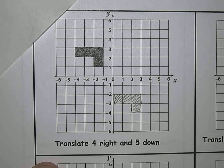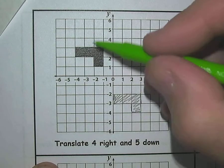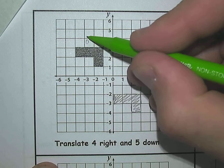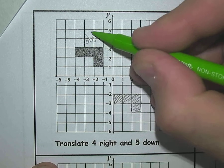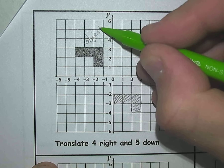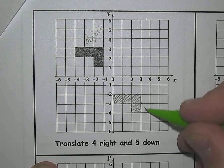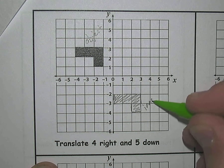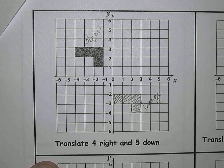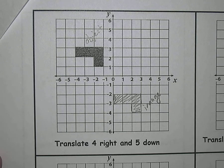Your original shape is called the object. And your translated shape is called the image.